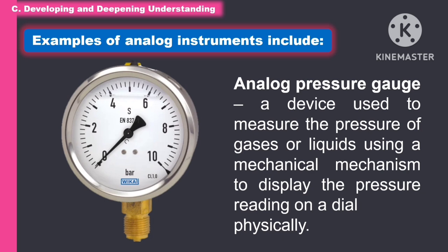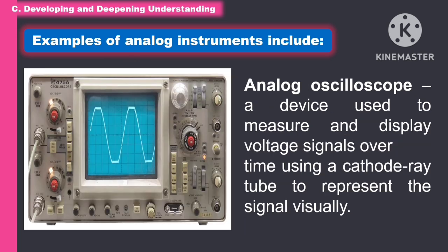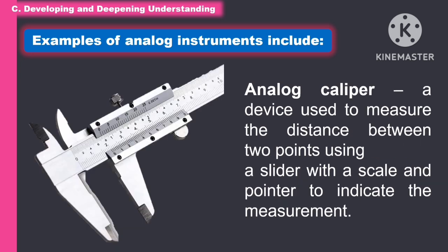Another example of an analog instrument is the analog pressure gauge, a device used to measure the pressure of gases or liquids using a mechanical mechanism to display the pressure on the dial. Another example is the analog oscilloscope, a device used to measure and display voltage signals over time using a cathode ray tube to represent the signal visually. Another example is the analog caliper, a device used to measure the distance between two points using a slider with a scale and pointer to indicate the measurement.